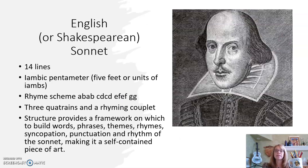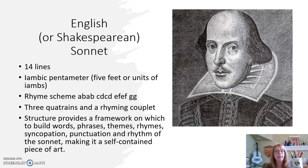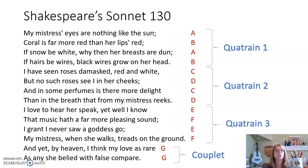The English or Shakespearean sonnet, made famous by Shakespeare himself, is a 14-line poem in iambic pentameter with a rhyme scheme A-B-A-B-C-D-C-D-E-F-E-F-G-G. This is three quatrains and a rhyming couplet. The structure provides a framework on which to build words, phrases, themes, rhymes, syncopation, punctuation, and rhythm of the sonnet, making it a self-contained piece of art. I have some videos talking about some of the more famous Shakespeare sonnets on my YouTube channel, One Lit Teacher.